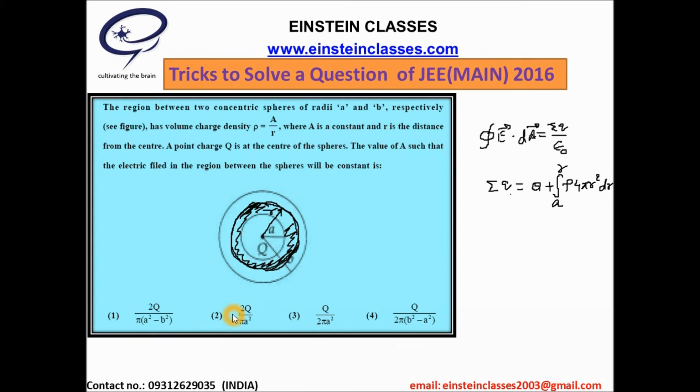Now we can assume that let the correct answer is 2. If this one is the value of a, then the electric field must come out independent of r, otherwise option